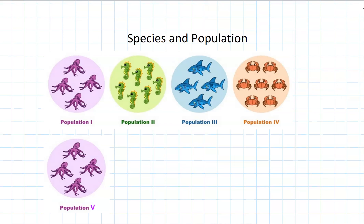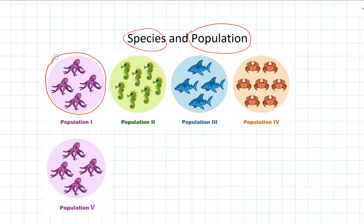Probably the two most important definitions in this topic are species and population. A species is a group of organisms that can breed among themselves to produce fertile offspring — meaning their offspring can also breed and have children. For example, octopuses are one species because they can breed amongst themselves, but they can't breed with seahorses, sharks, or crabs, so those are all different species.